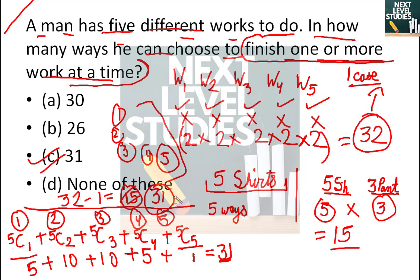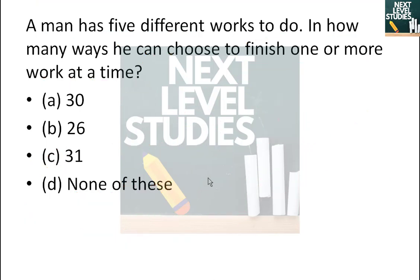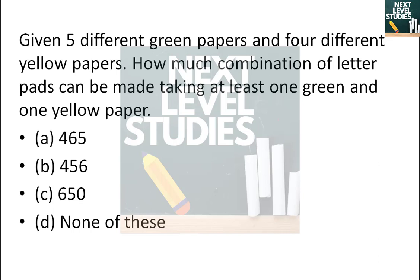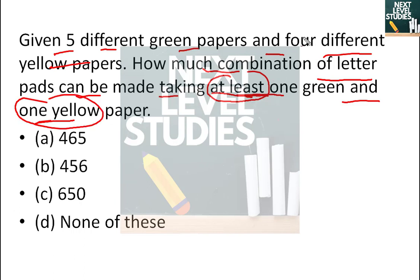Next, a similar question. We have given 5 different green papers and 4 different yellow papers. How many combinations of letter pads can be made taking at least one green and one yellow paper? So we need at least one of each.